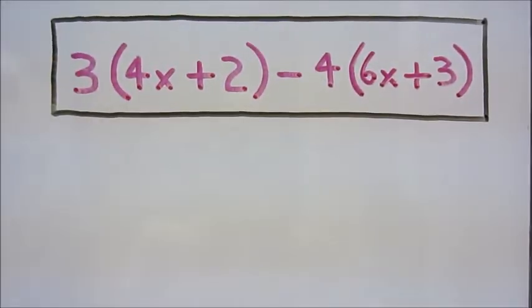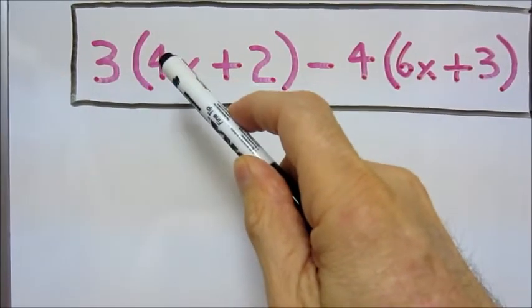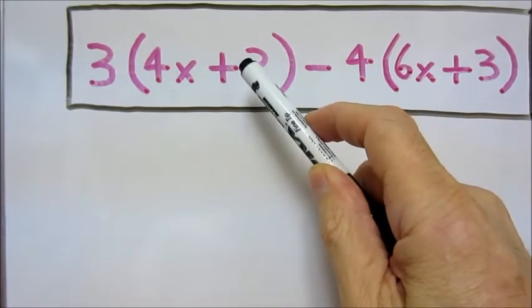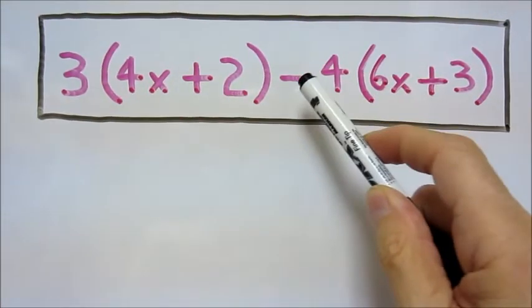Since we are working with the distributive property, we have to multiply 3 by 4x and 3 by 2, and then negative 4 by 6x and negative 4 by 3.